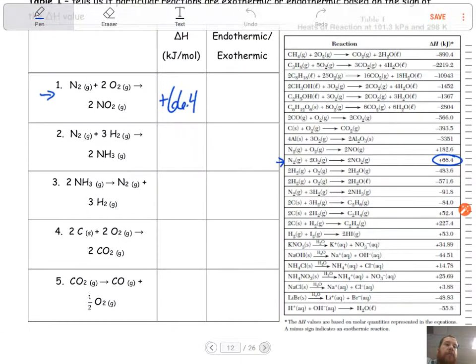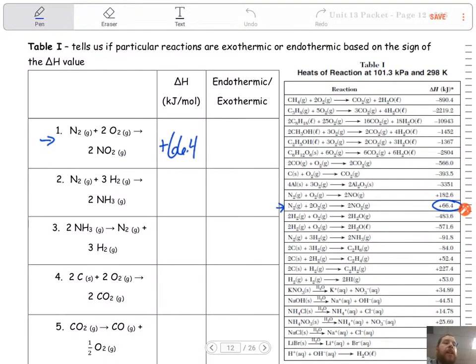Remember, if it's exothermic, it's a negative delta H. If it's endothermic, it's positive, meaning you have to put energy into it. So this is a positive delta H. That means this is going to be endothermic.